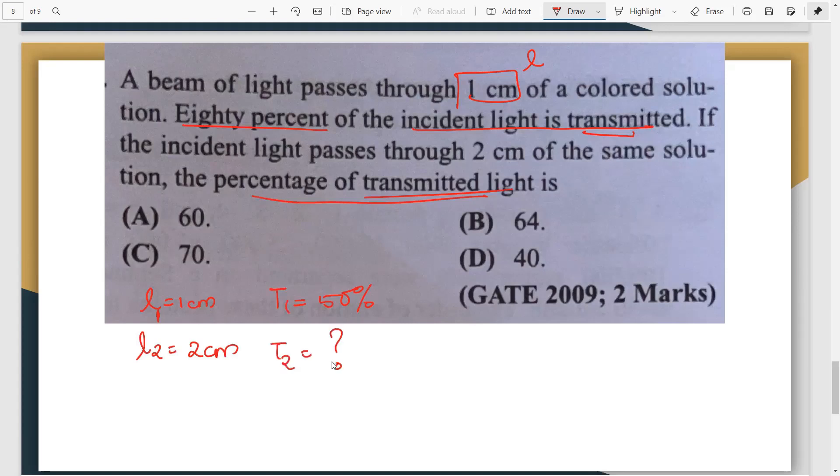Now we don't know any direct relationship between T and L. But we know a relationship between absorbance and path length. We know that absorbance is directly proportional to the path length. So now we want to try and convert this transmittance into absorbance. So imagine there are two terms: incident light and transmitted light.